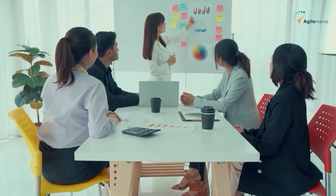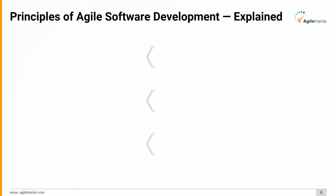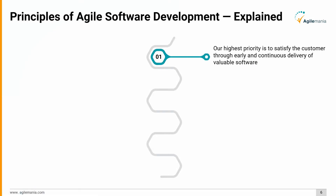Now let's deep dive into the 12 principles of agile software development. The first principle: our highest priority is to satisfy the customer through early and continuous delivery of valuable software.